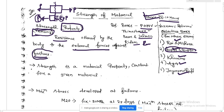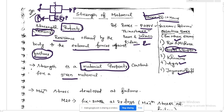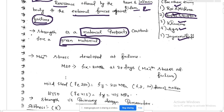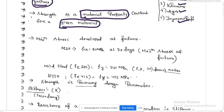Strength is a material property, and it is constant for a given material. Wood has a different strength compared to aluminum, gold, or steel. For mild steel, the strength is taken as 250 MPa.